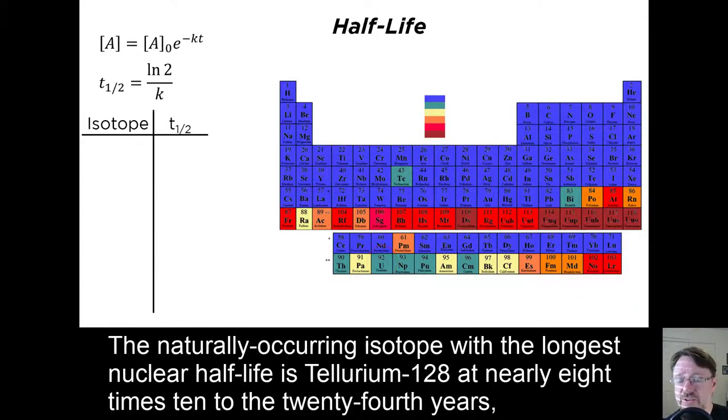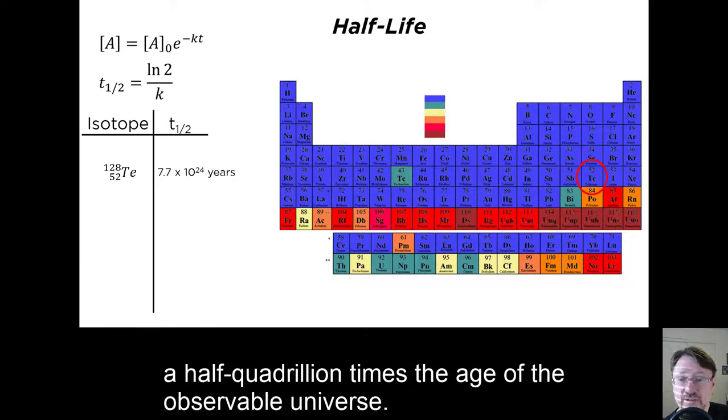The naturally occurring isotope with the longest nuclear half-life is Tellurium-128 at nearly 8 times 10 to the 24th years, a half quadrillion times the age of the observable universe.